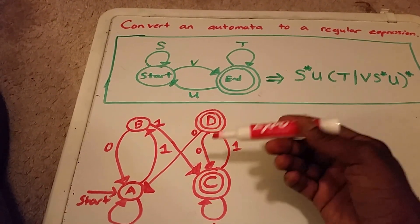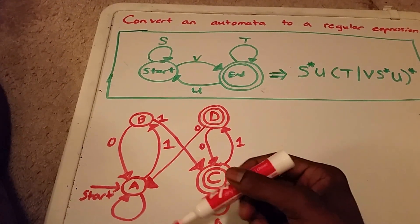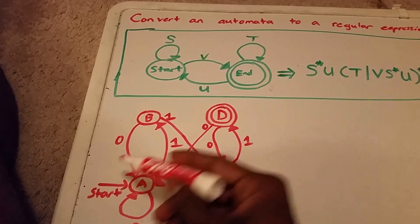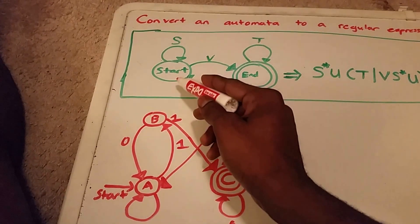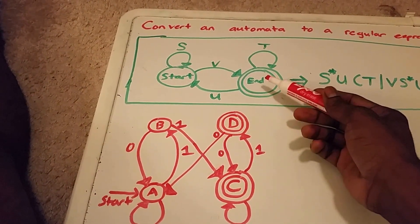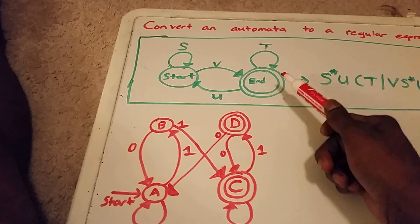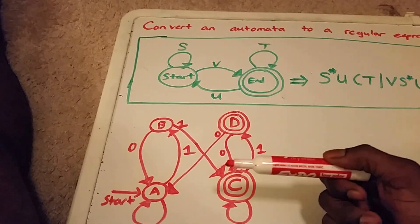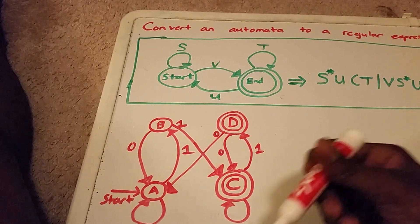And so here I have an example of an automata. You have the start state here at A, and we have two end states, C and D. You see we have an end state there, so it's not exactly in this form. So in order to get into that form, we need to use a process called state elimination.